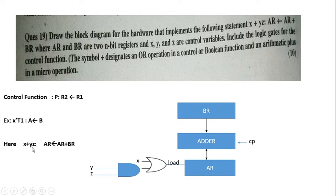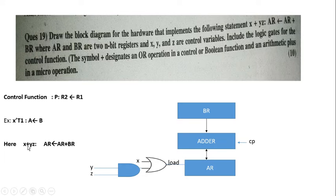The micro-operation here means an addition. The plus operator in the micro-operation part indicates an arithmetic addition, and the plus operator in the control function part indicates a logical OR gate, as stated in our question. So how can we draw this diagram?